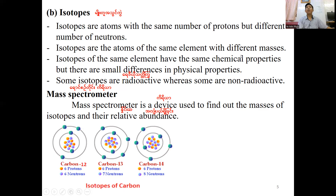We have different measures. The mass number is the total of protons and neutrons. The mass number represents the isotope.